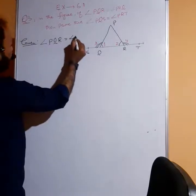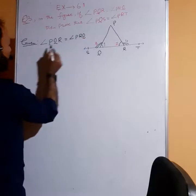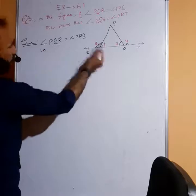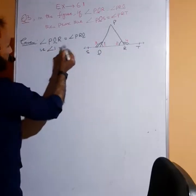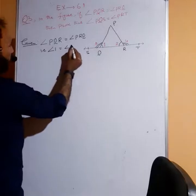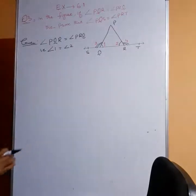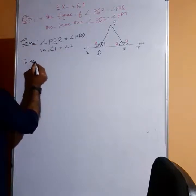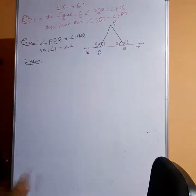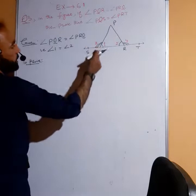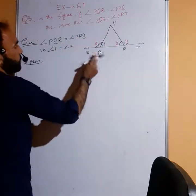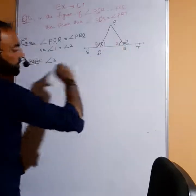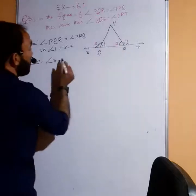Angle PQR is the same as angle PRQ. Given: angle 1 and angle 2 are given. To prove: angle PQS equals angle PRT.